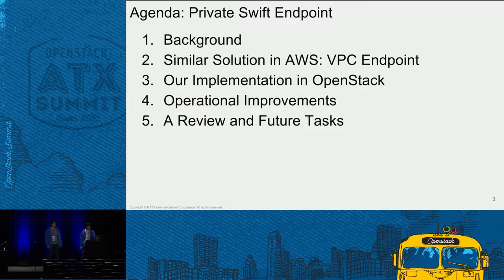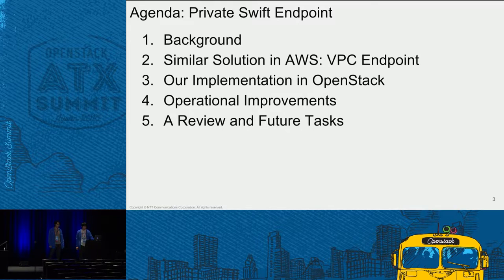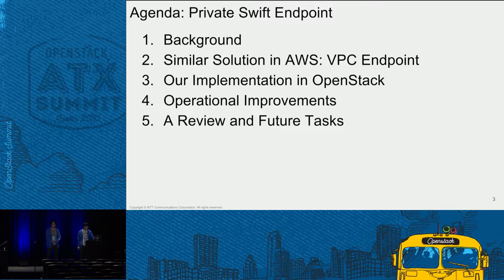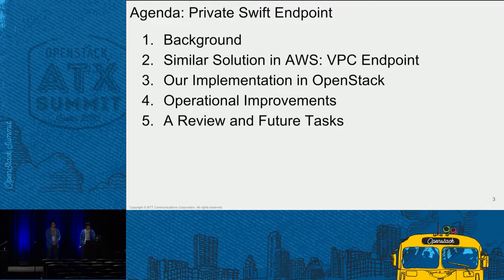Today we will talk about private Swift endpoint. Here is the agenda of this presentation. First, we will explain our background. Then, we will introduce a similar solution in AWS called VPC endpoint. After that, we will discuss our implementation of private endpoint in OpenStack and additional operational improvements. Finally, we will summarize our presentation and show some future tasks.